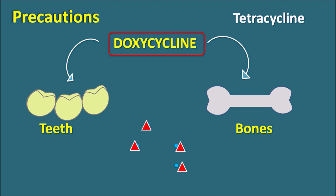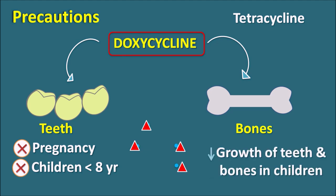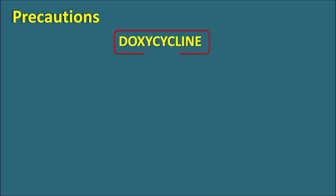Because of its effects on teeth and bones, doxycycline should not be given to pregnant women, particularly in the later stages of pregnancy, as it can reduce fetal growth. This drug is also not prescribed in children less than eight years, where it can produce discoloration of the teeth and demineralization of the bones. Even in children above eight years, it can reduce the growth of teeth and bones, so it should be prescribed carefully and only when required.